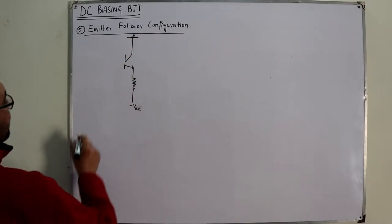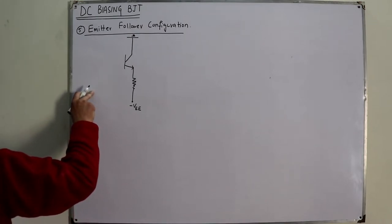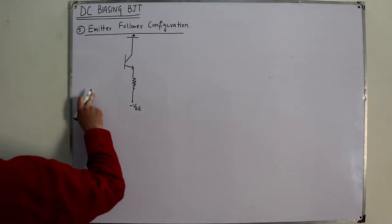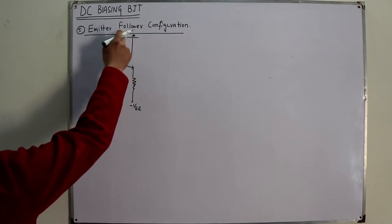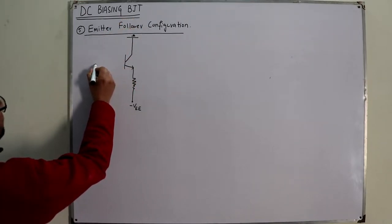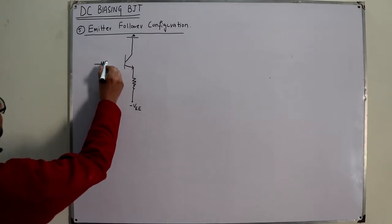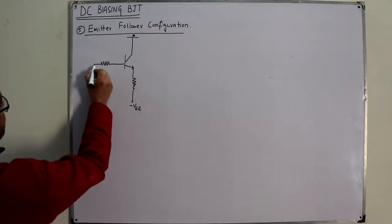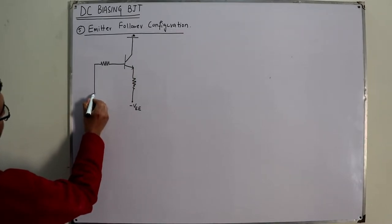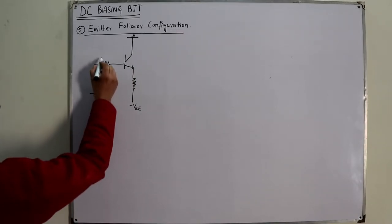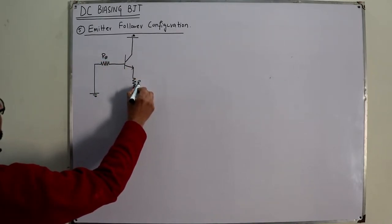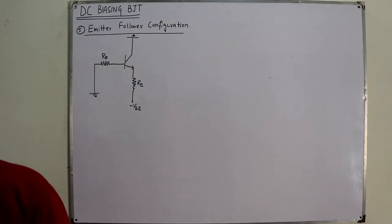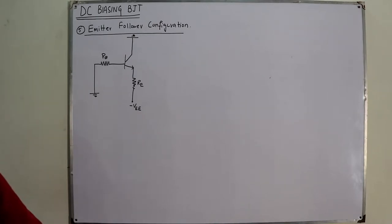VCC is not here. We have a base resistance, and since it was connected to VCC, it is also grounded. So the base resistance RB is grounded as well. This is your base resistance RB, and this is your emitter resistance RE.